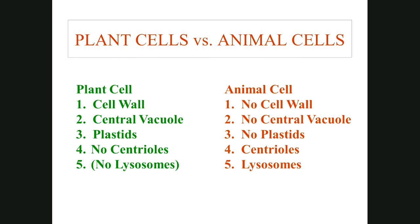Plant cells have a central vacuole occupying 75–95% of the cell's volume. Animal cells do not have central vacuoles. Plants have plastids — some for color, some for photosynthesis. Animal cells have melanocytes for color but not plastids. Plant cells do not have centrioles; animal cells do, and centrioles appear to be involved in cell division.